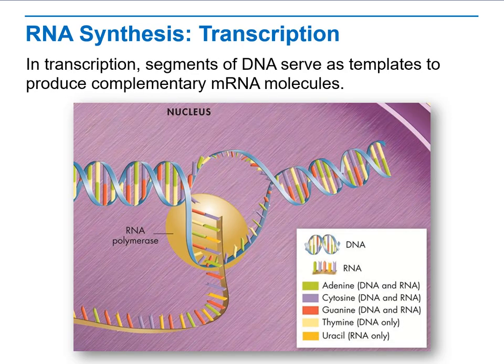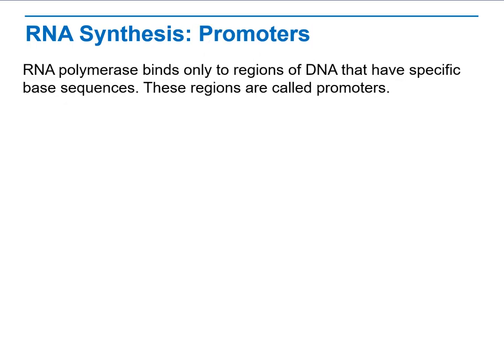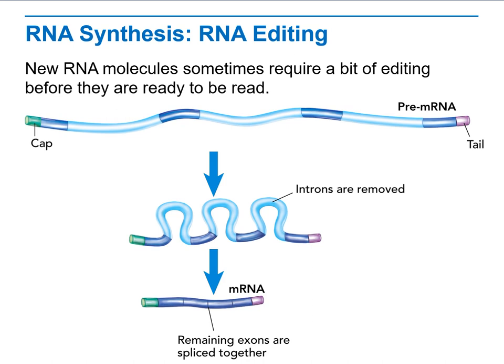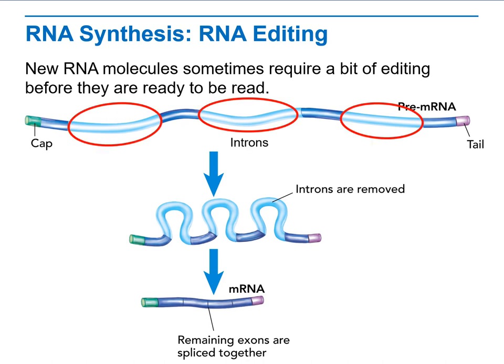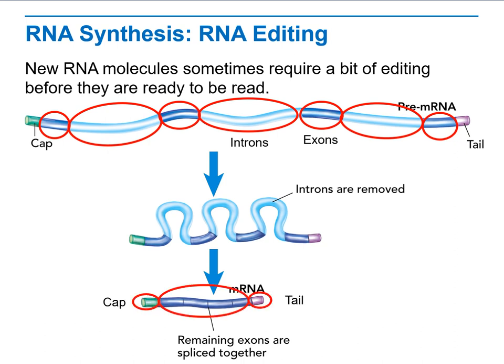Then we will go through the process of transcription and RNA synthesis, where we have two types — the parts of RNA synthesis and editing for RNA, including introns and exons, and how they remove the introns and exons to make a new one containing only the...